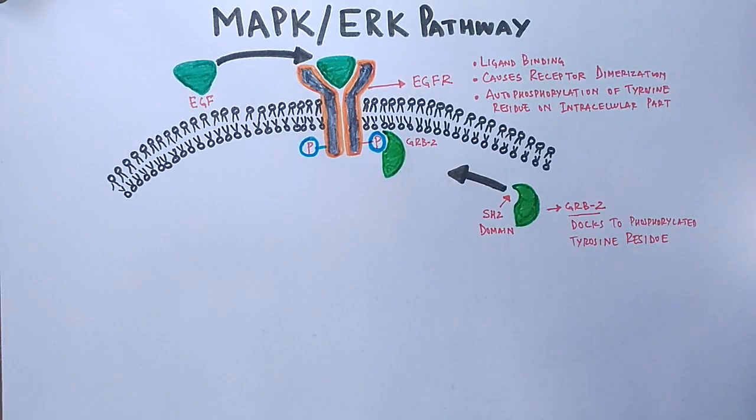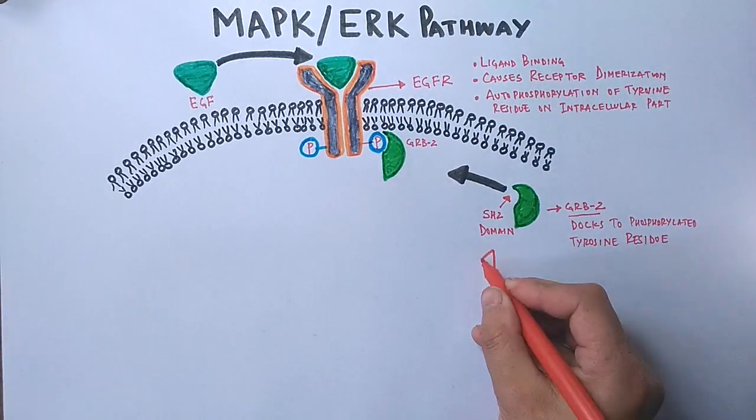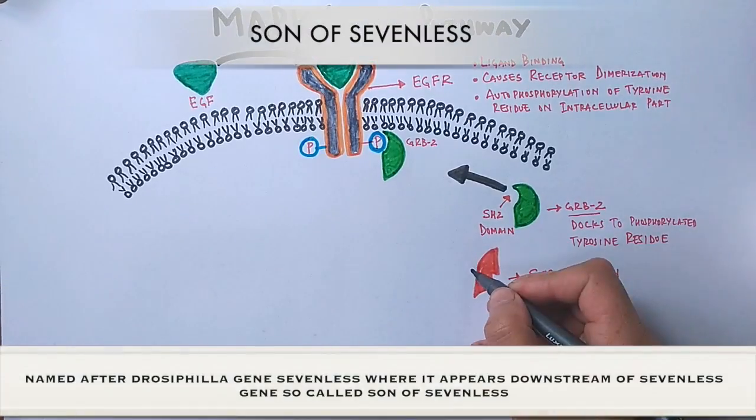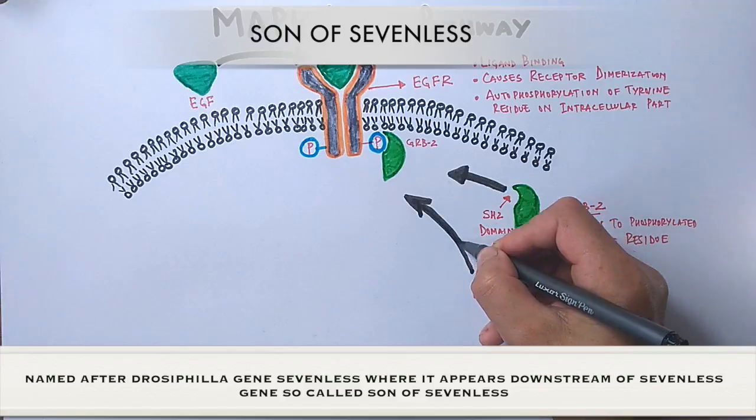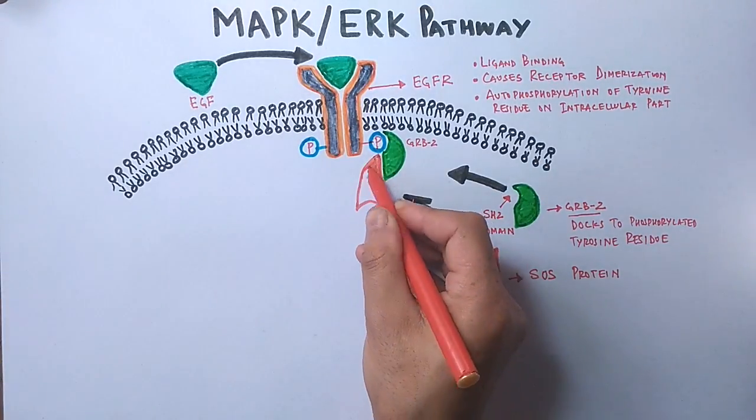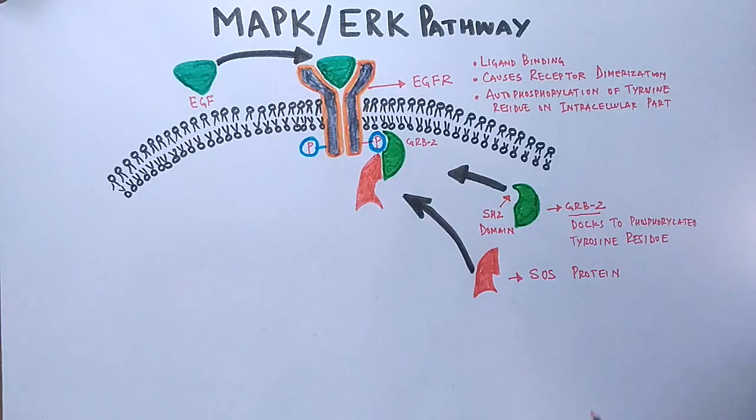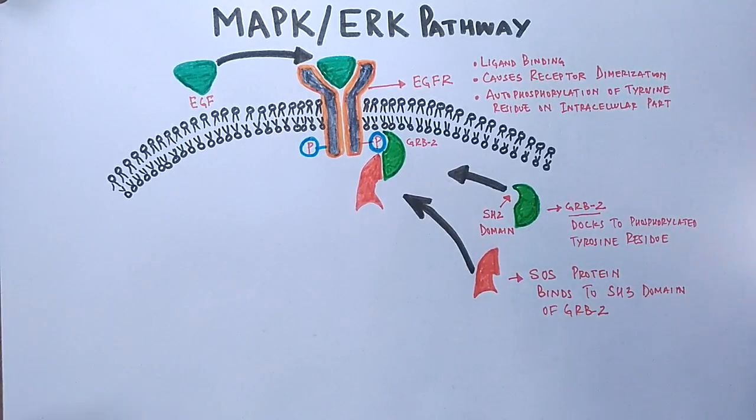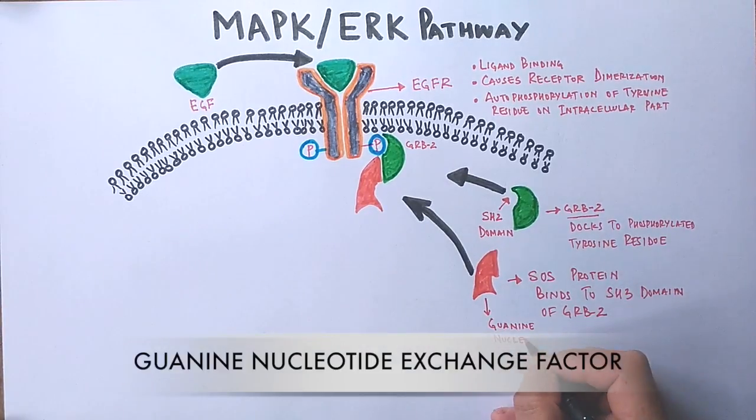Then this activated GRB2 molecule now recruits another molecule called SOS. This SOS gets attached to the SH3 domain of GRB2, just beneath the SH2 domain. Remember the SOS molecule because it's one of the essential molecules in this pathway. It is the guanine nucleotide exchange factor.